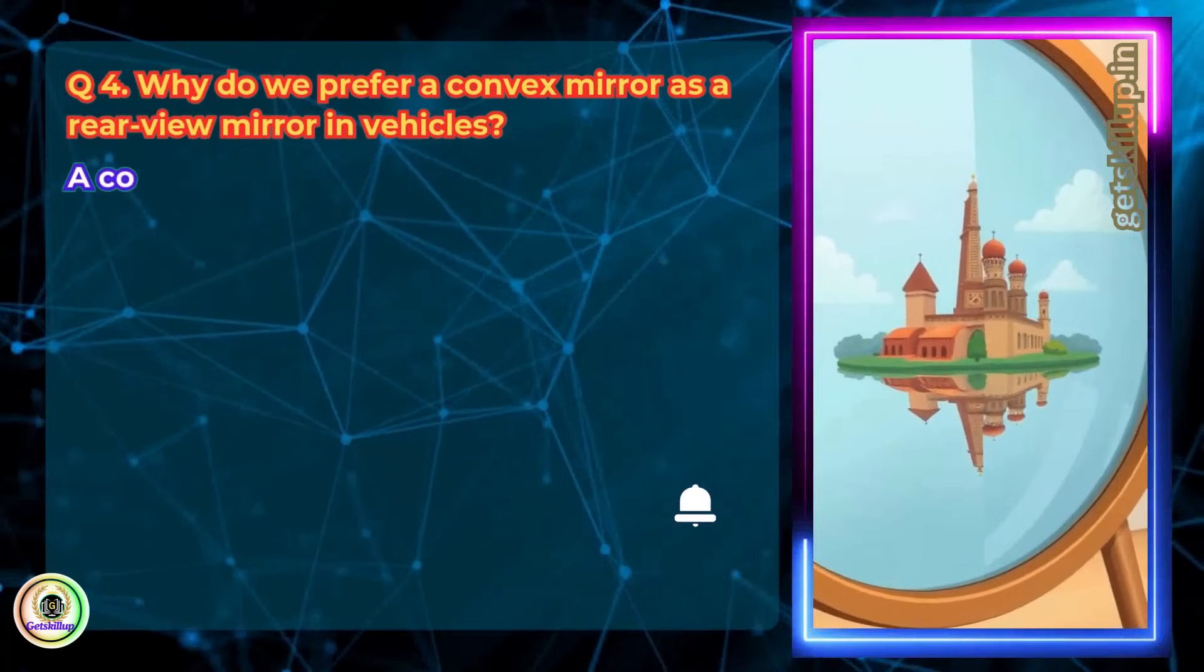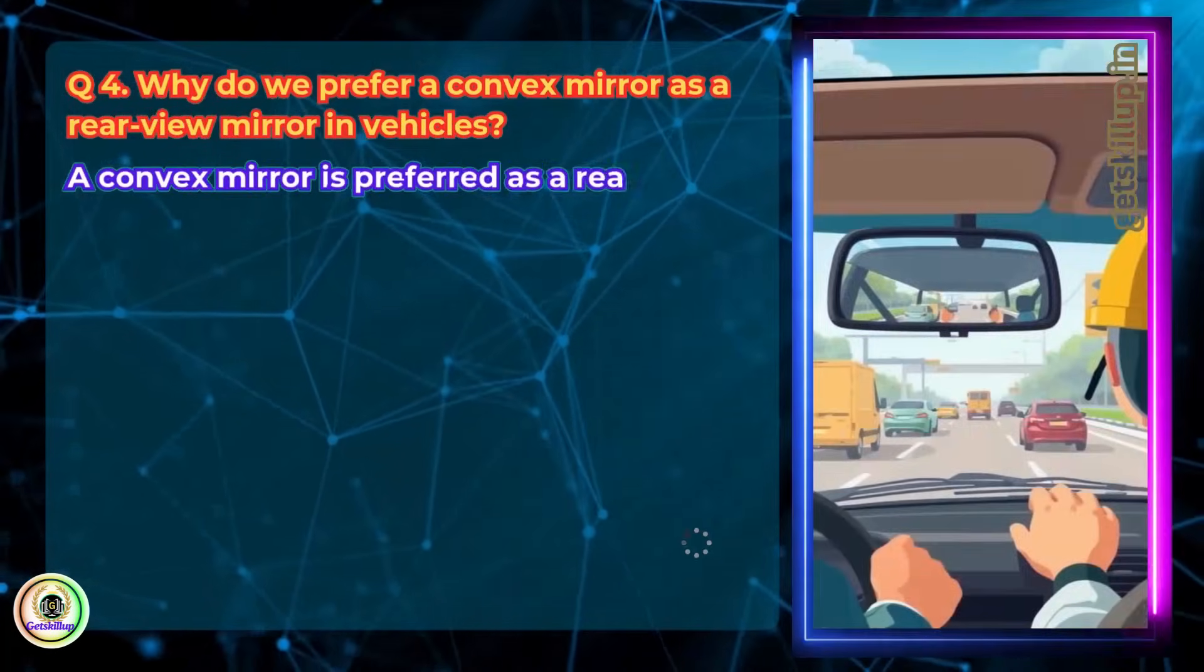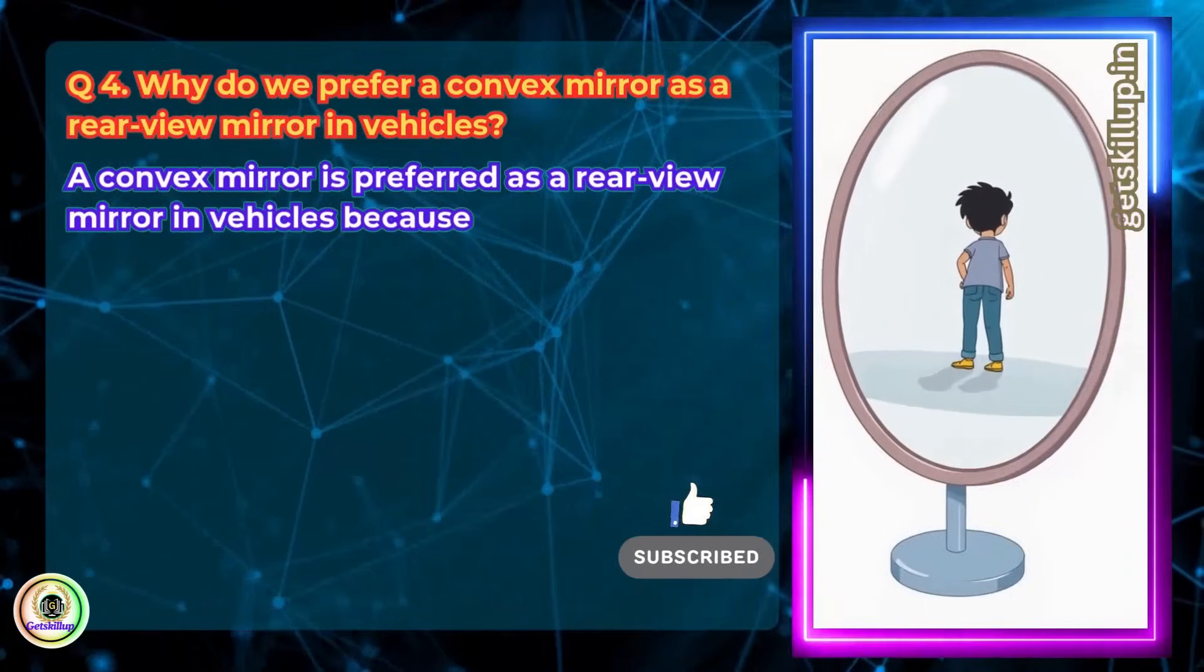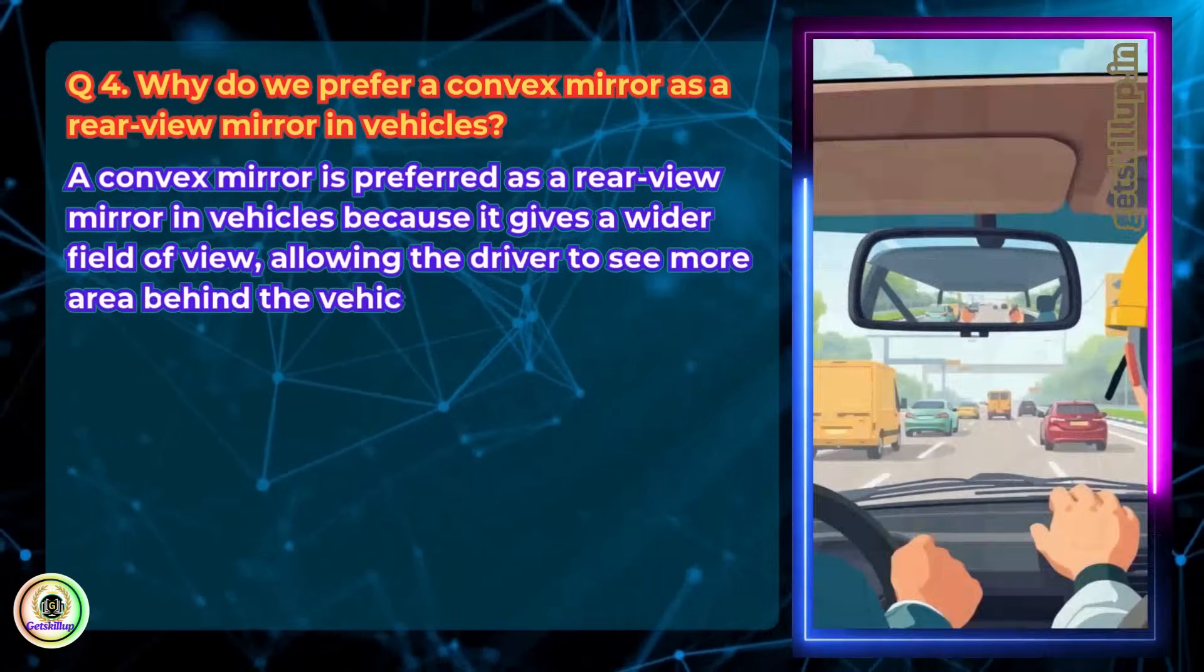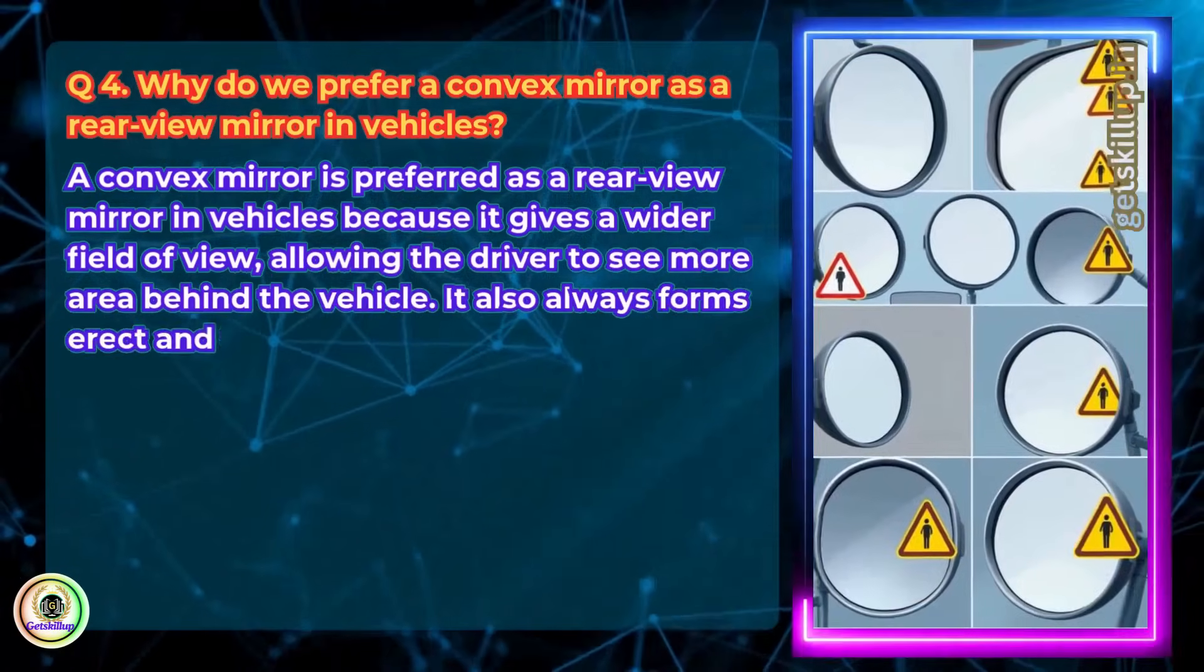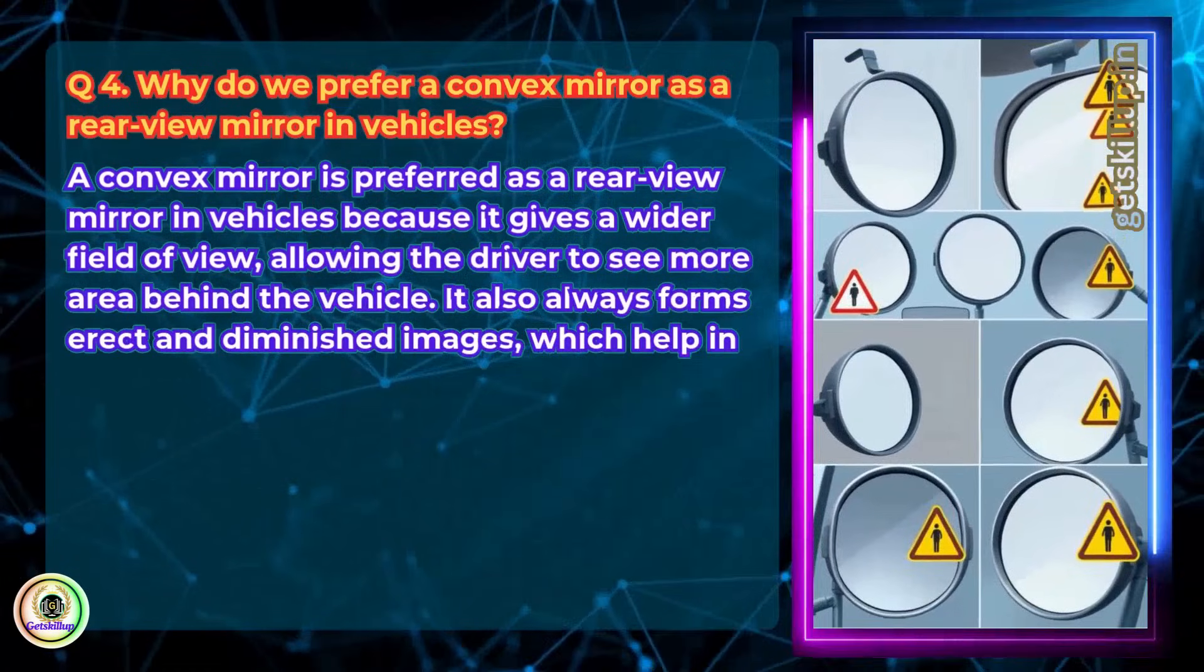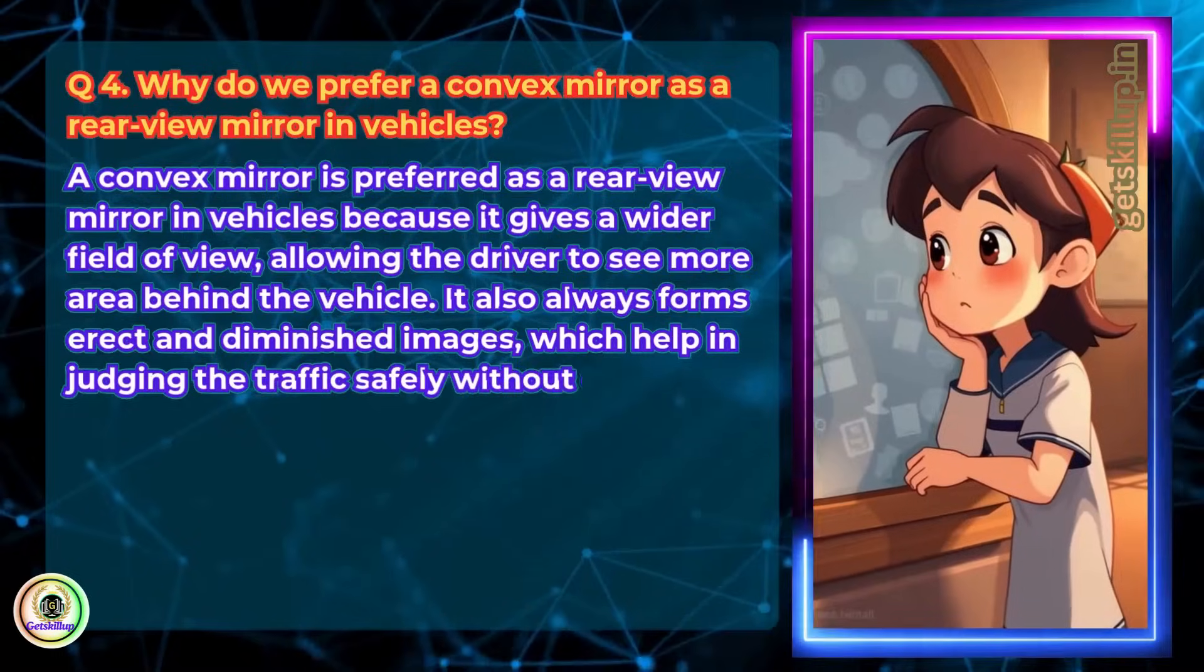A convex mirror is preferred as a rear-view mirror in vehicles because it gives a wider field of view, allowing the driver to see more area behind the vehicle. It also always forms erect and diminished images which help in judging the traffic safely without distortion.